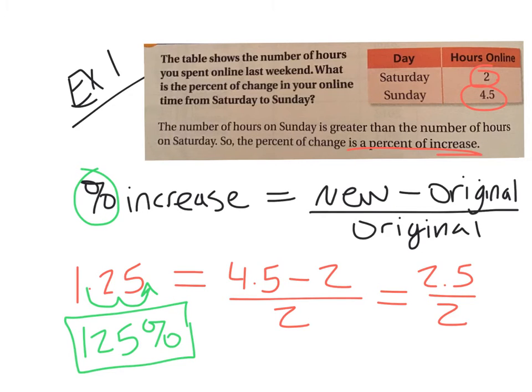So the percent of increase was 125 percent. On Sunday you spent 125 percent more time on the internet than you did on Saturday.